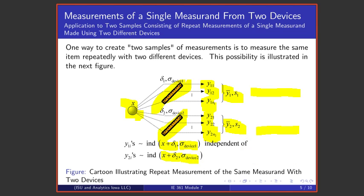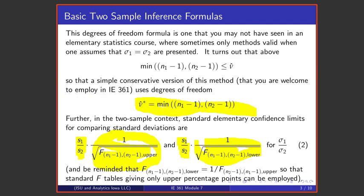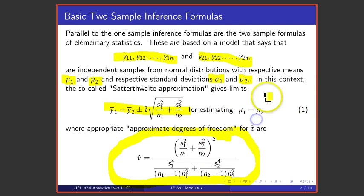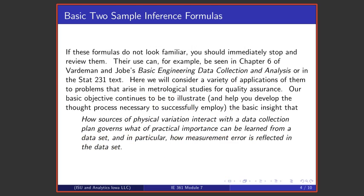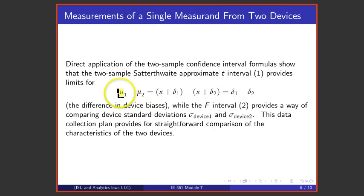With that in mind, remembering that we have this formula, so-called two sample t formula, for estimating a difference in means, it's obvious then that the difference in mean number one and mean number two is the difference in these measurand plus bias, and by the time one does arithmetic, it's obvious that applying the two sample t interval to data of this form gives us a way of comparing the two biases for the two measurement devices.